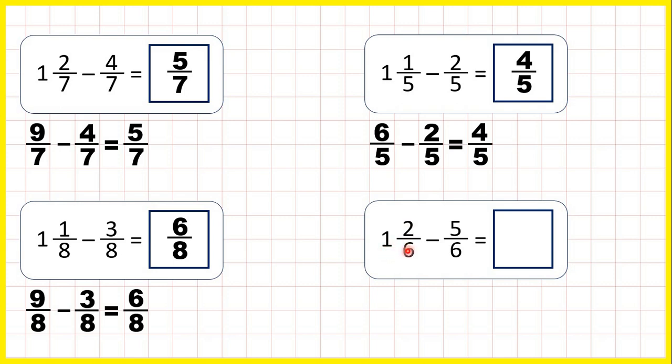One and two-sixths is the same as eight-sixths, because one times six is six, plus two is eight. We're subtracting five-sixths, so the denominator stays the same. Eight minus five is three, so our answer is three-sixths.